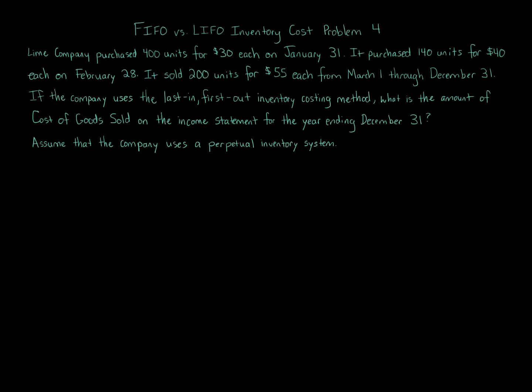FIFO vs LIFO Inventory Cost Problem 4. Lime Company purchased 400 units for $30 each on January 31st. It purchased 140 units for $40 each on February 28th. It sold 200 units for $55 each from March 1st through December 31st. If the company uses the last-in, first-out inventory costing method, what is the amount of cost of goods sold on the income statement for the year ending December 31st? Assuming the company uses a perpetual inventory system.